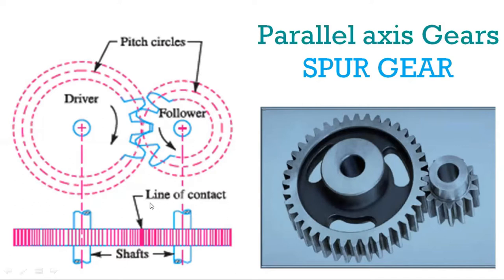The driving member is called the driver and the driven member is called the follower. The contact between the teeth of the two gear wheels takes place in a linear fashion — it is a line contact. The general representation of a gear is the pitch circle. This is the addendum circle and this is the dedendum or root circle; in between is the pitch circle. The point where the two pitch circles are in contact is called the pitch point. The larger is the gear and the smaller is called the pinion; the gear is the driver and pinion is the follower, giving an increase in speed.